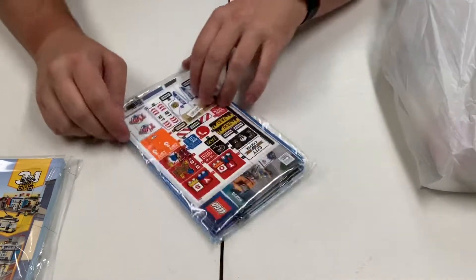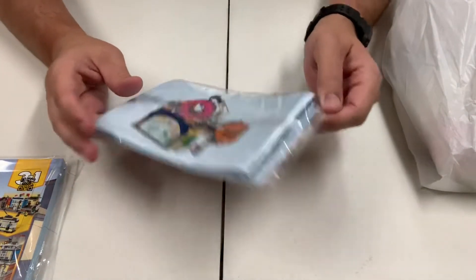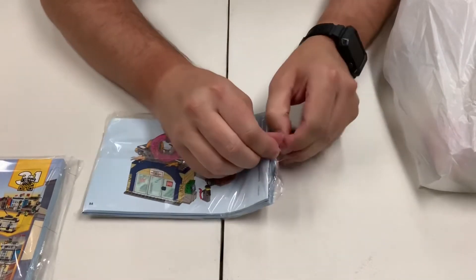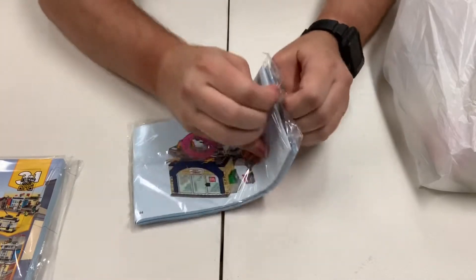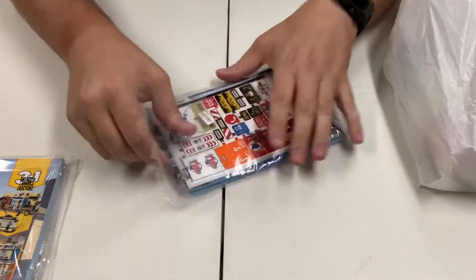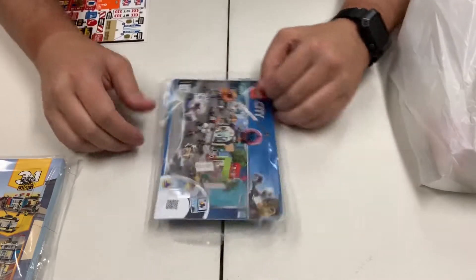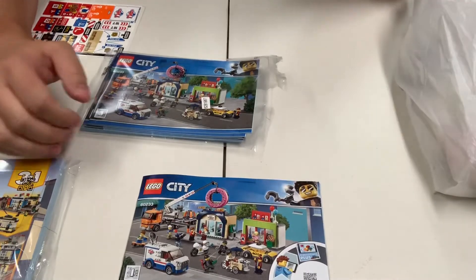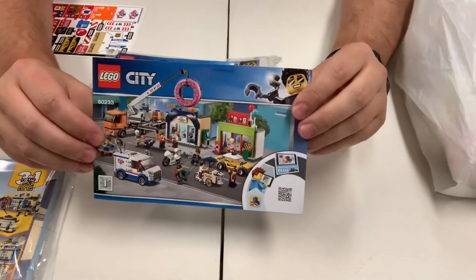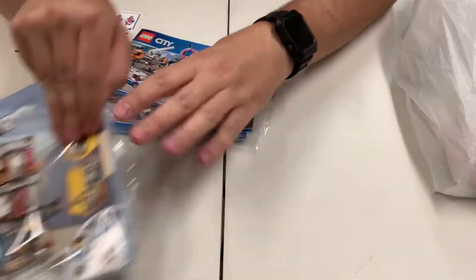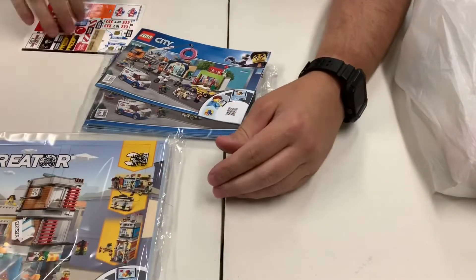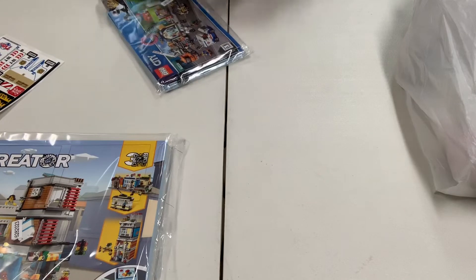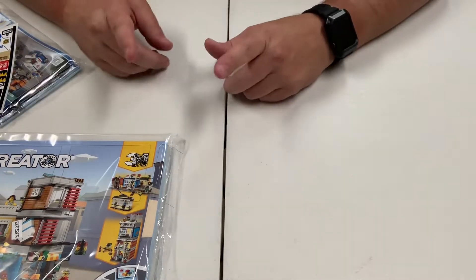And then the second set, you get an idea right there. The way they put it in this bag, they kind of put the stickers over the very first manual there. There you go. So set 60233. Let's go ahead and we'll build and review these. We'll do a quick time-lapse.